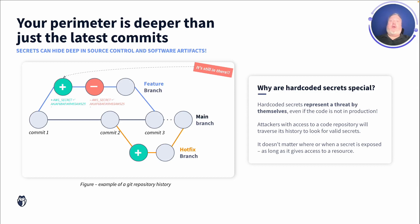Not only can GitGuardian unearth the secrets buried in your commit history, it can also protect you in real time. GitGuardian will guard your perimeter when code is pushed from your developer's local machines to the shared repos.